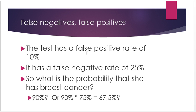The test has a false positive rate of 10%. That means among people who do not have breast cancer, 10% of those will actually get a positive result. That's a bit on the high side, but for a screening test that's not unreasonable — though this number was made up to keep things simple. It also has a false negative rate of 25%, meaning among people who do have breast cancer, it's going to miss it 25% of the time — again higher than ideal, but it's a cheap and quick screening.